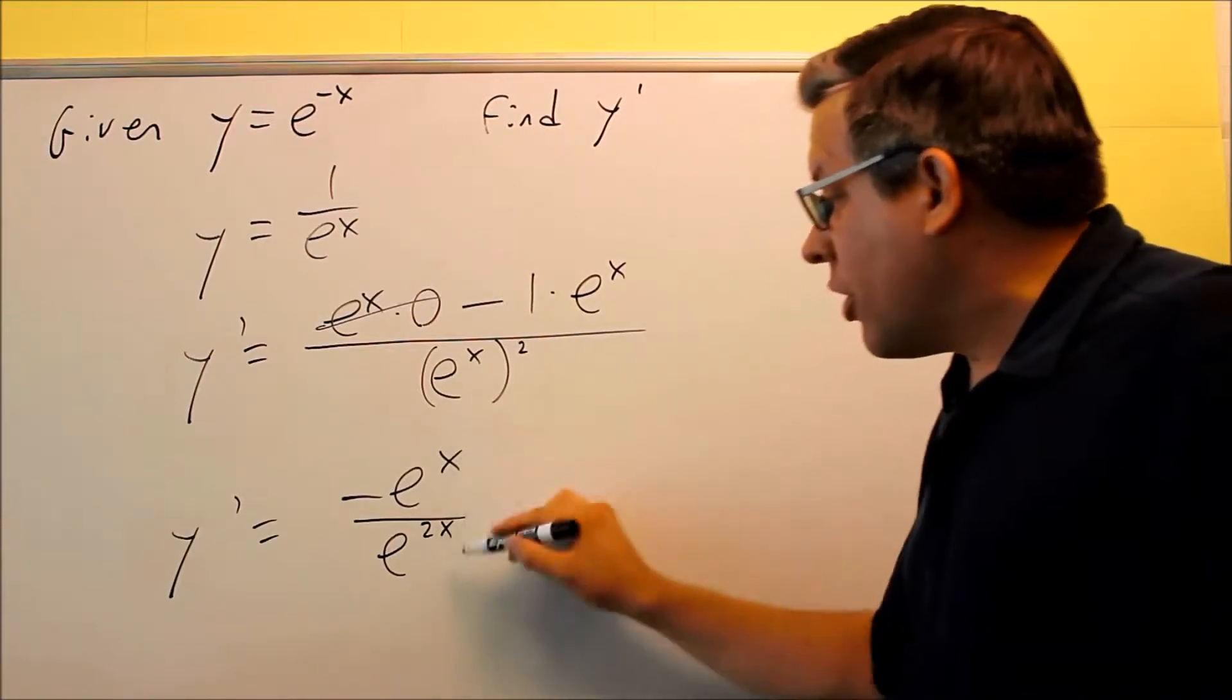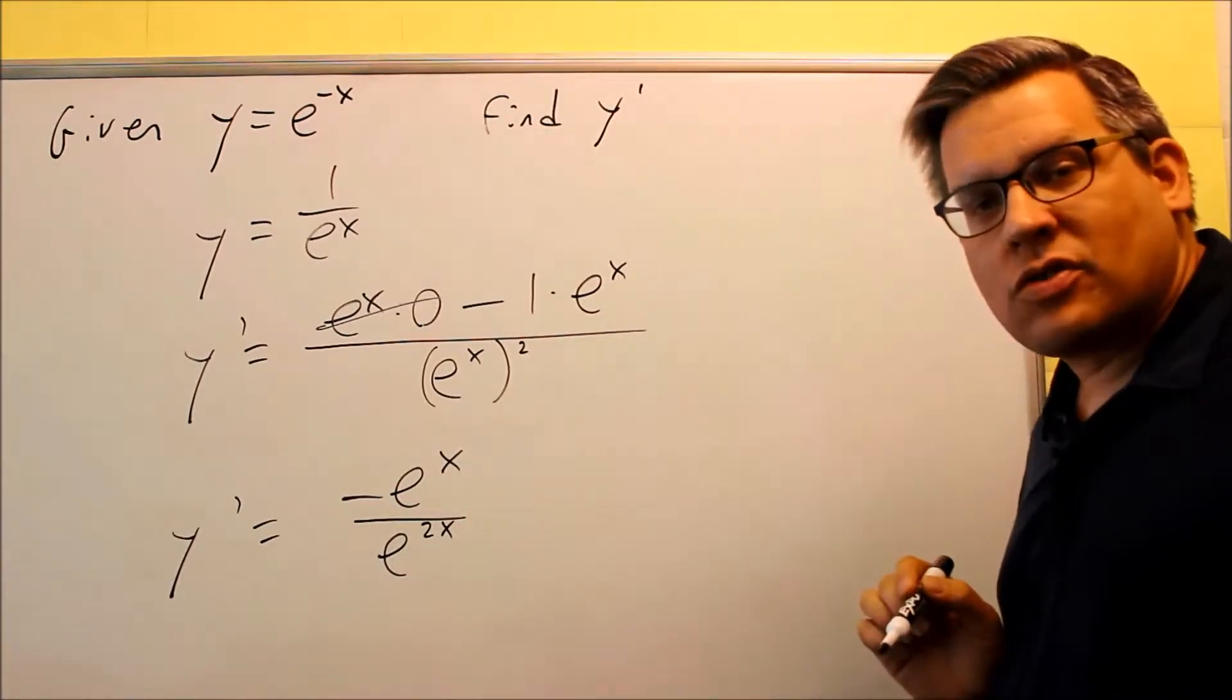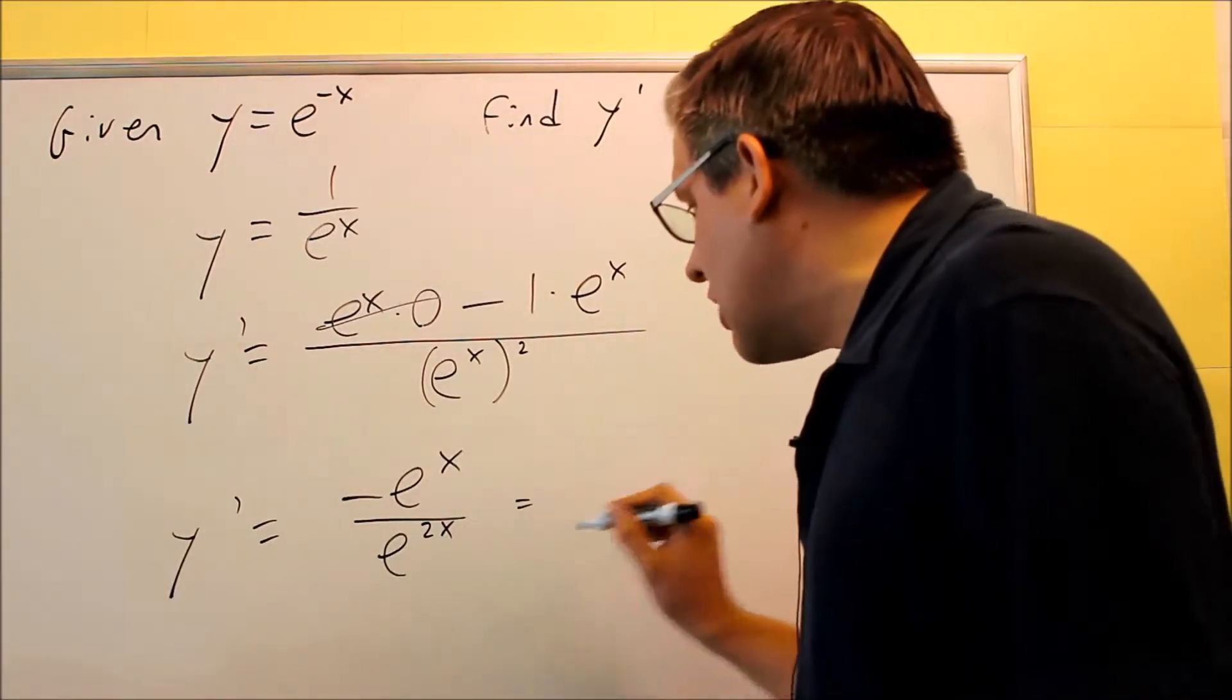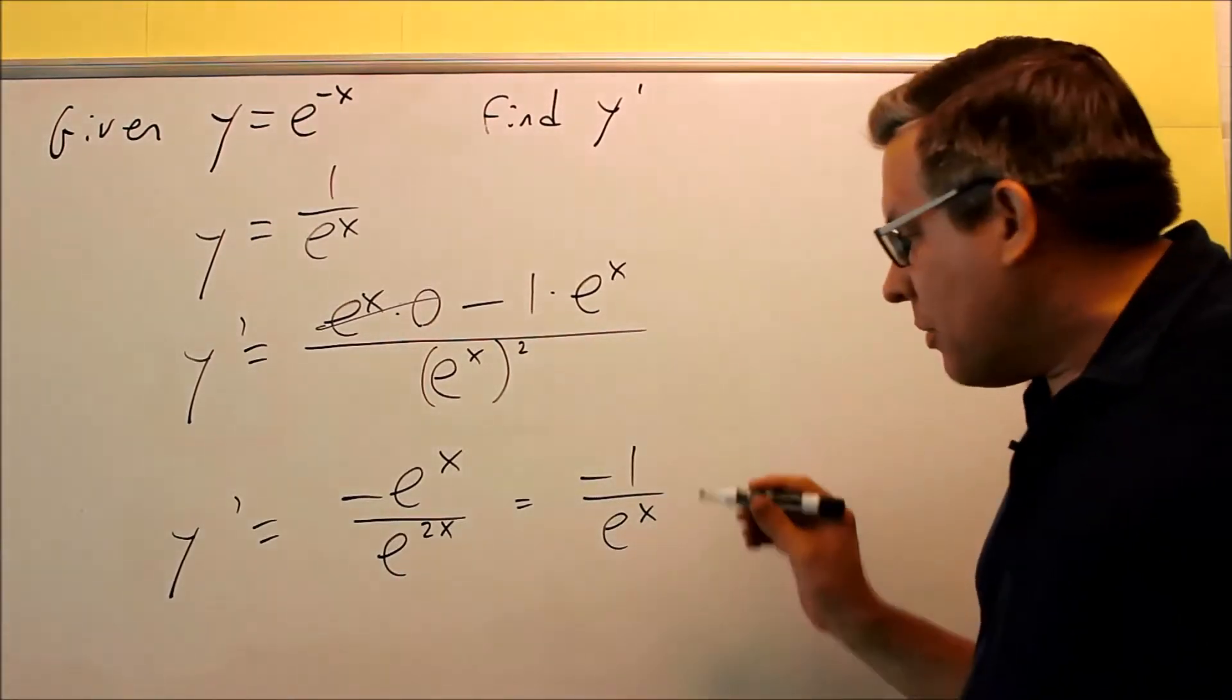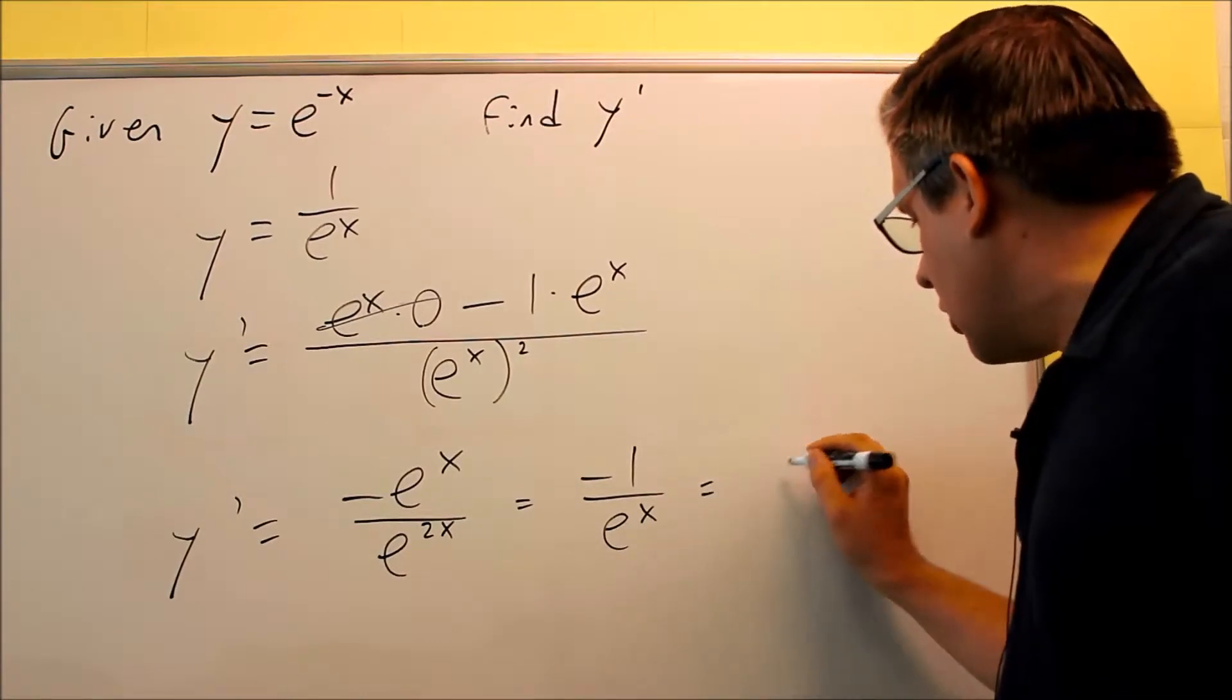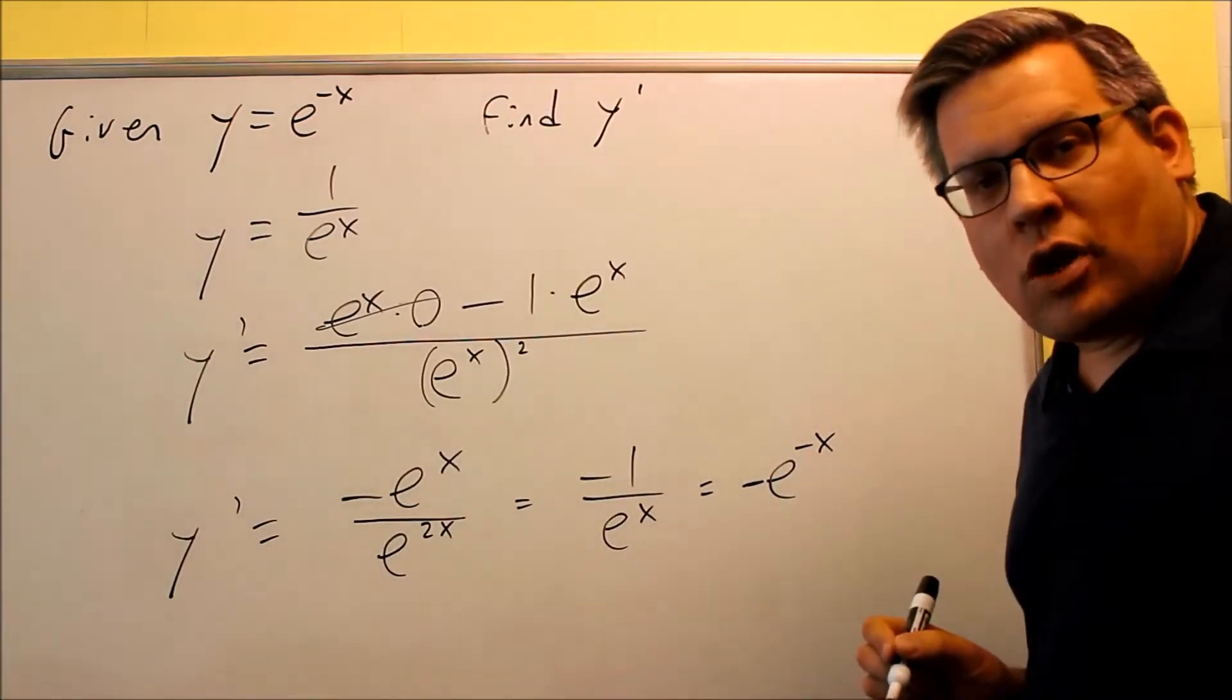And now, since we have two things with the same base, the negative we can pull out front, so technically we do the same base here, to subtract the exponents, what will happen is you end up with an x in the bottom. So you'll get negative 1 on top, and then you'll get e to the x on the bottom. So this is going to be your final answer, or you can write it as negative e to the negative x. That would be another way of writing that as well.